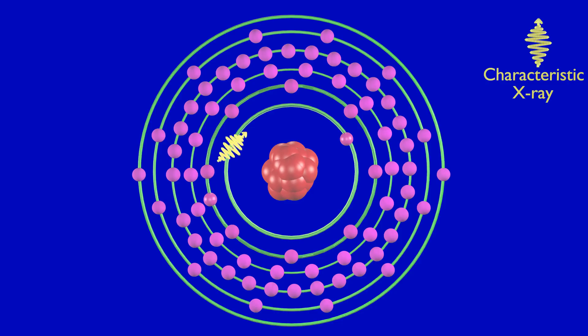Amount of energy released will be equal to difference of energy of outer shell and inner shell. If the energy of emitted electromagnetic radiation falls in the range of X-rays, we call it a characteristic X-ray.